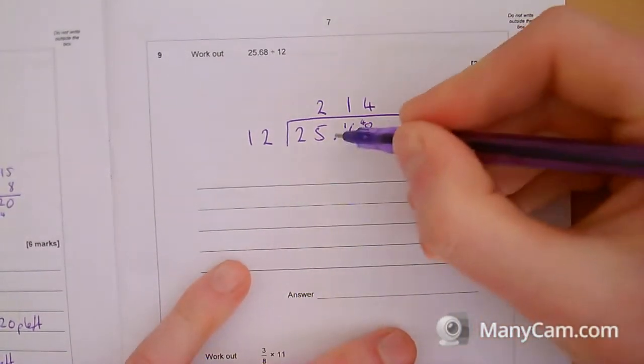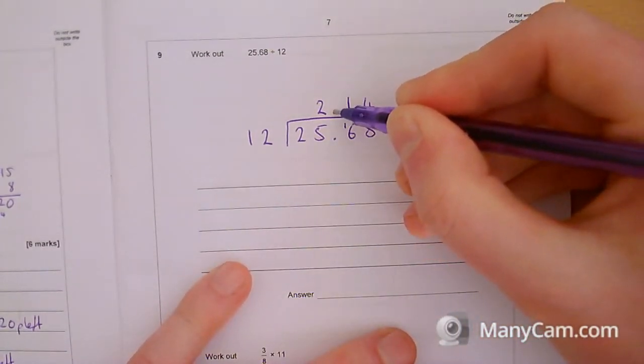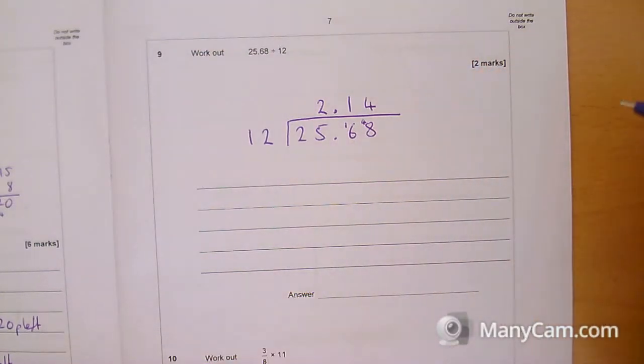I just need to make sure I put my decimal point in the same place, same position as the 25.68, so my answer ends up being 2.14.